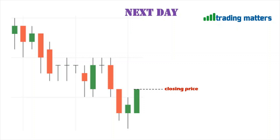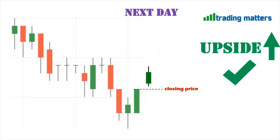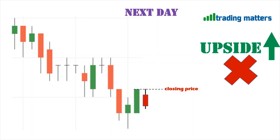The second way is to place the order on the next day around the closing price of the previous day's Marubozu candle. The advantage of the next-day entry is that you can observe whether the next day's candle opens above or below the closing price. If it opens above, you can doubly confirm that the trend is going to move upside and place the trade. If the next day's candle opens below the closing price, you do not place any trade.